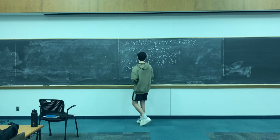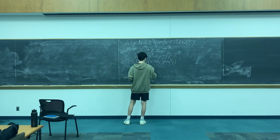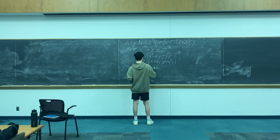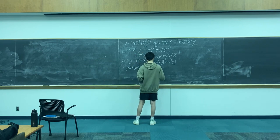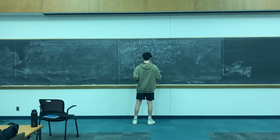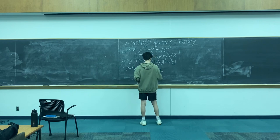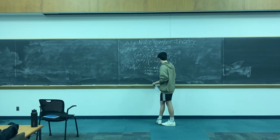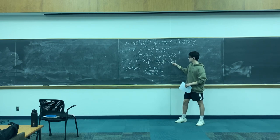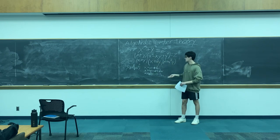We could write x plus y as equal to some a plus bω — these are simple expressions. The point is that because we're in this new space, we can write each of these factors in this new form. We've transitioned from the integers to this new space, and because we're in this new space, we know that each of these elements can be expressed in this form.